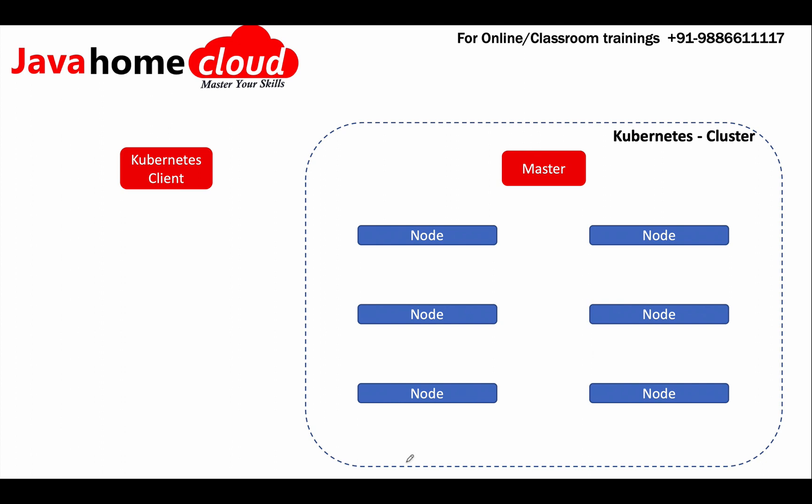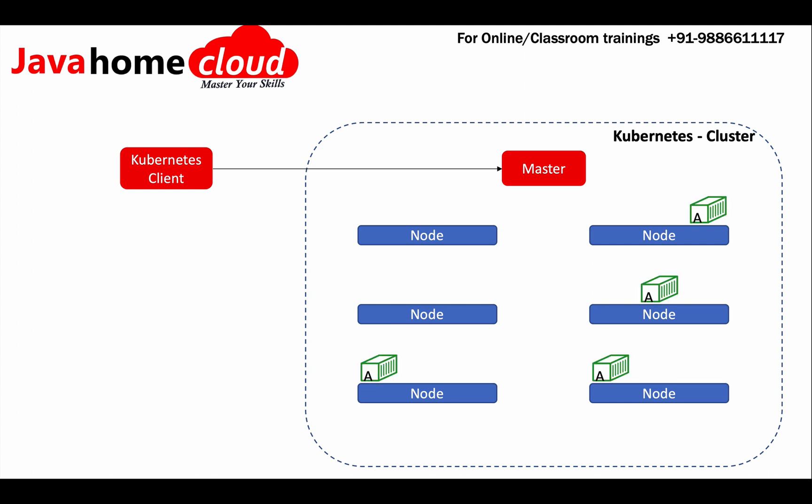For example, if we want to deploy an application into a Kubernetes cluster with four replicas, we issue that instruction to the Kubernetes master using the Kubernetes client. The master receives the instruction from the client and performs scheduling — which means it finds out the nodes on which it has to create the four replicas.